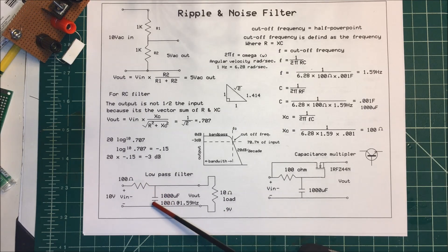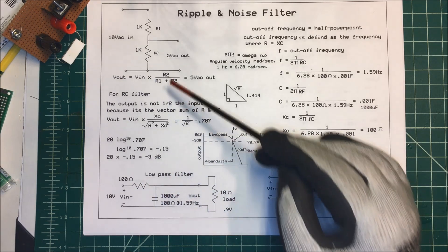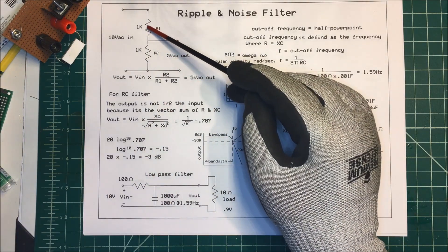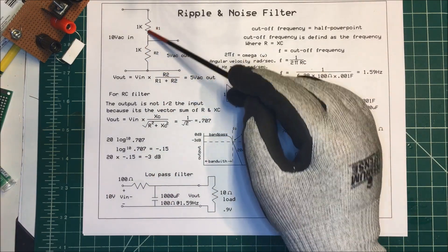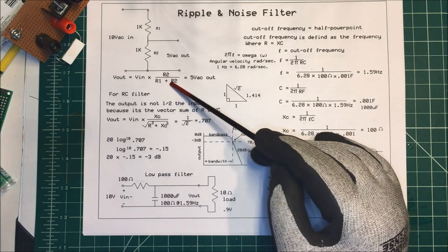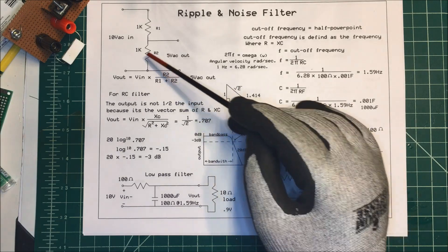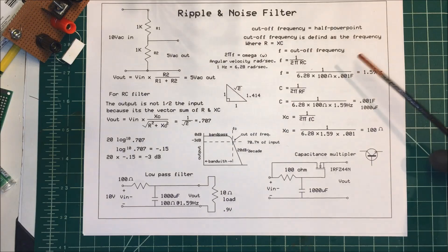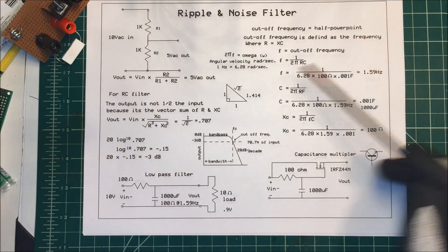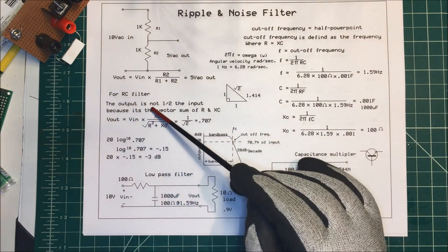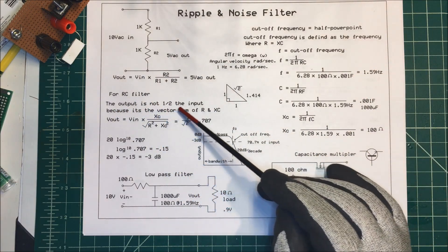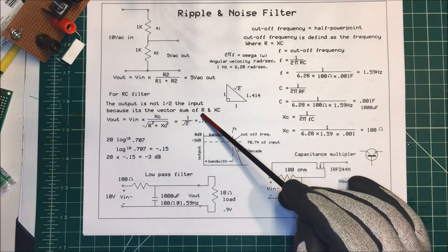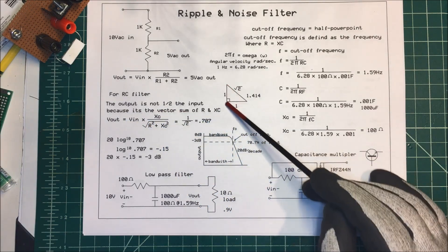Looking at this circuit, it's the same as a voltage divider. In a standard voltage divider with 1kΩ and 1kΩ, putting 10 volts in gives 5 volts out — it just cuts it in half. But for the output of an RC filter it's not half, because it's the vector sum of R and XC — they're 90 degrees apart.